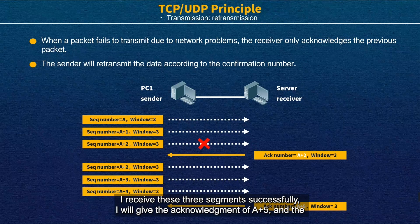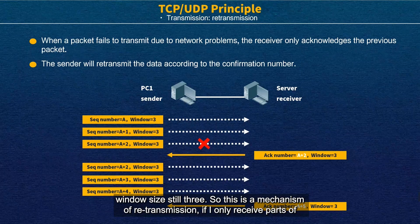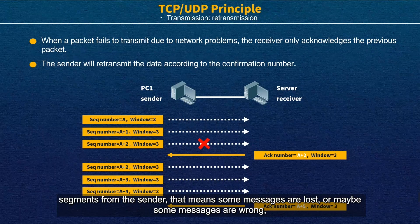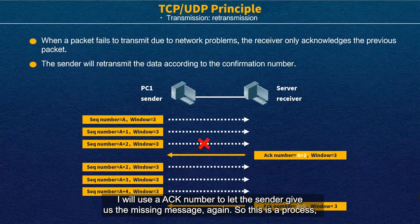When PC1 receives this acknowledgement from the server, it will begin the next message with sequence number A+2. Because the window is 3, it continues sending A+2, A+3, and A+4. If the server receives all three segments successfully, it gives acknowledgement A+5 with window size still 3. So this is the retransmission mechanism — using the ACK number to ask the sender to retransmit missing or corrupted messages.